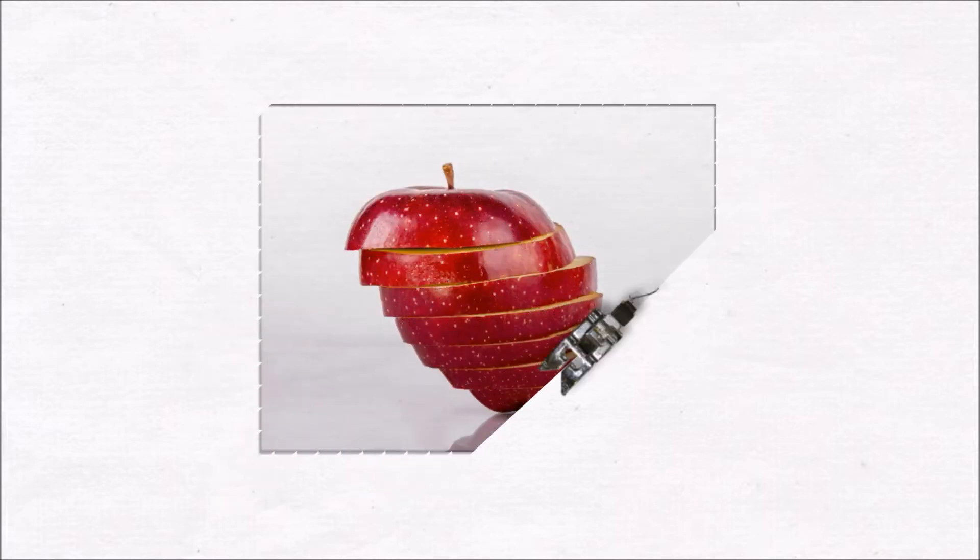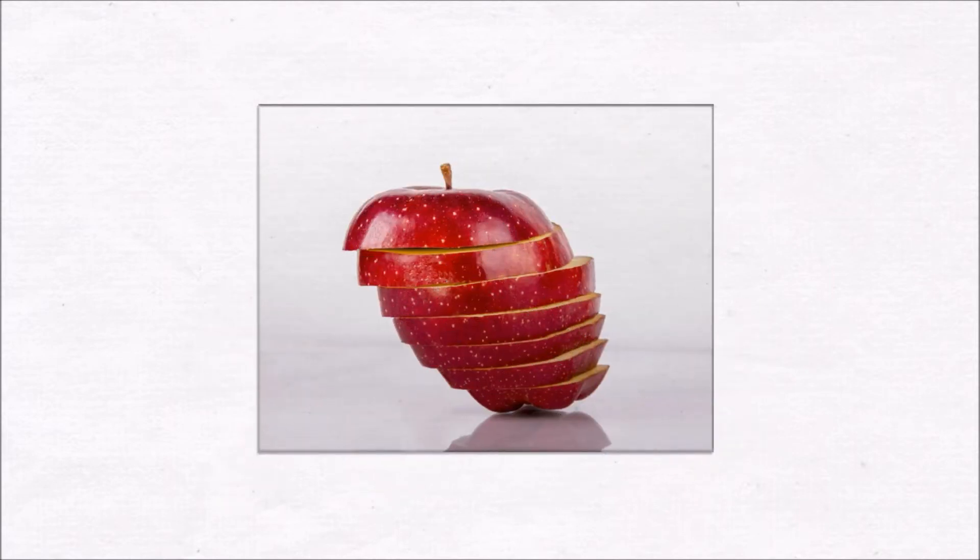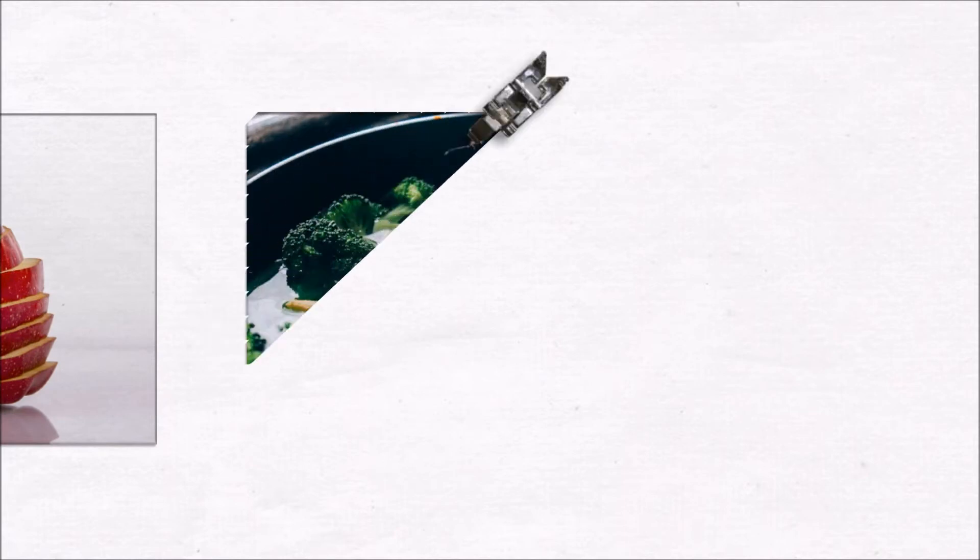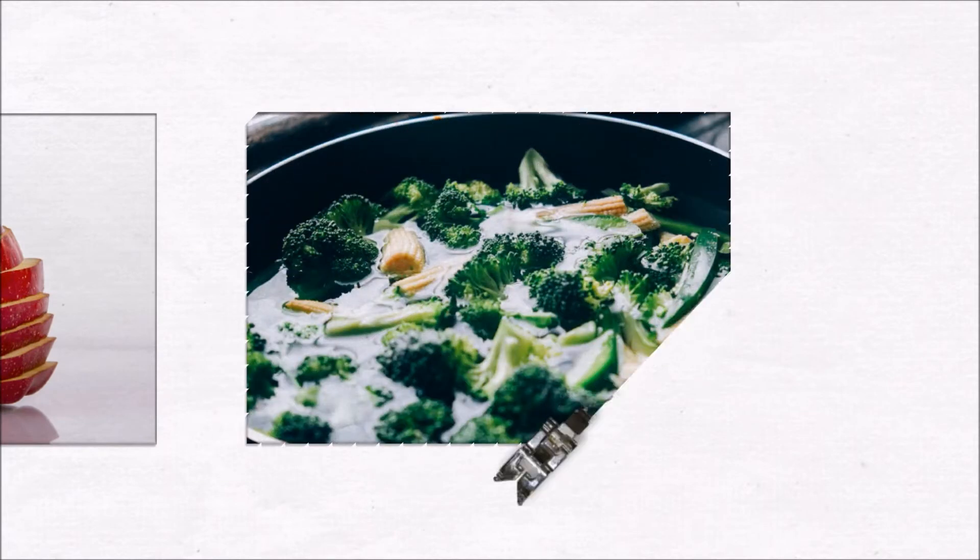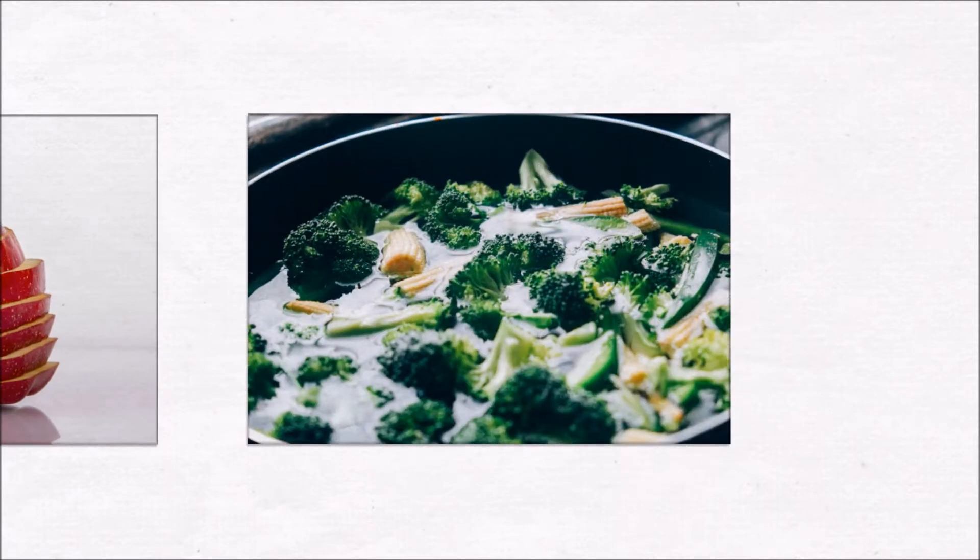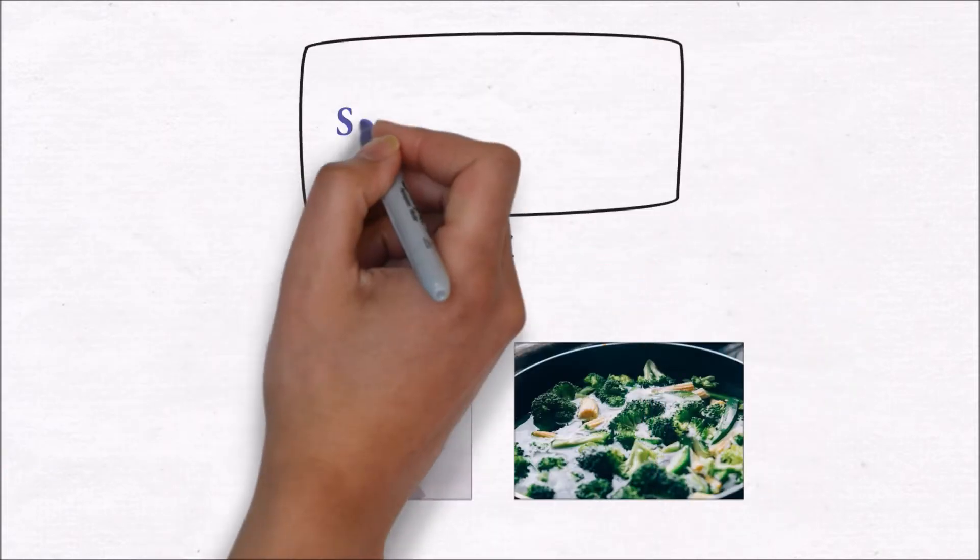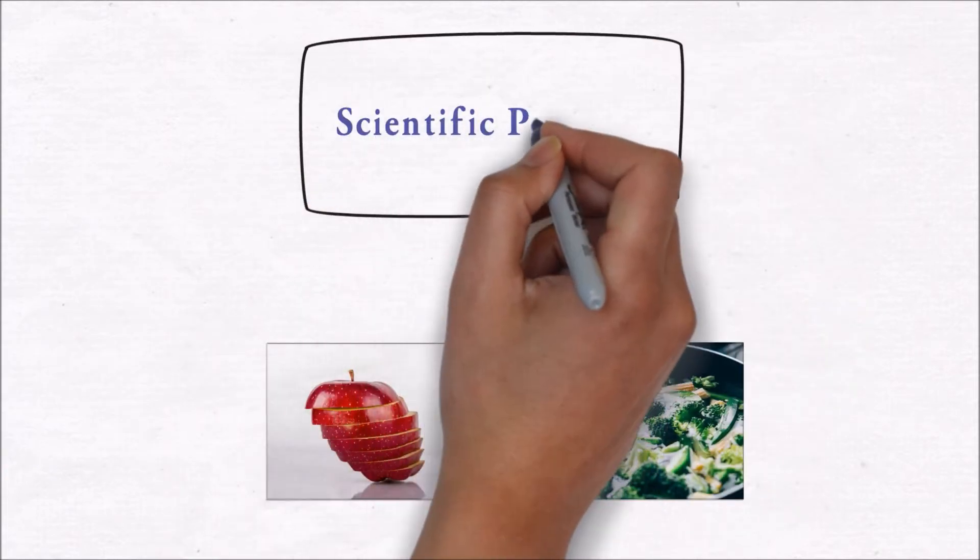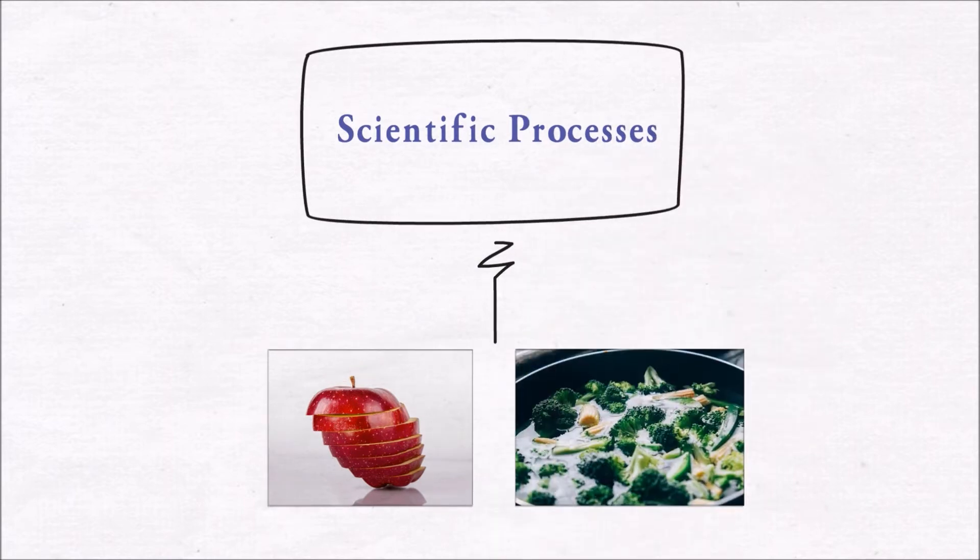Imagine that adding lemon juice to a sliced apple stops the browning process, or recall the color change in vegetables after cooking. These phenomena are considered scientific processes in food science.